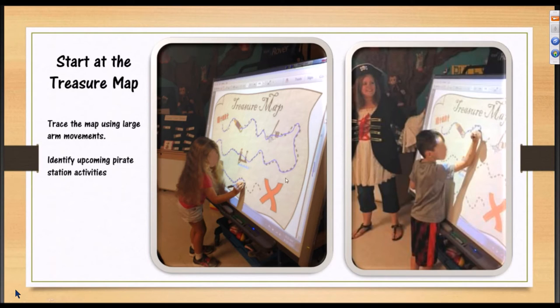So the kids can see on our smart board that first we're going to look through the spyglass, and then we're going to swab the deck. They can talk through these as they trace it. So we're integrating language, fine motor, and gross motor all together.